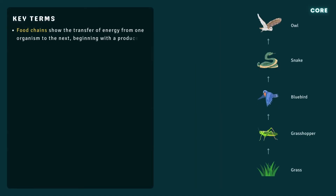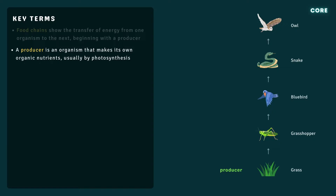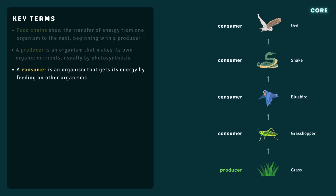A food chain is a diagram that shows the transfer of energy in a biological system from one organism to the next. A producer is an organism that makes its own organic nutrients, usually using energy from sunlight through photosynthesis. Since all the energy in a biological system comes from the sun, a food chain always begins with a producer. A consumer is an organism that gets its energy by feeding on other organisms, so every member of a food chain other than the producer is a consumer.